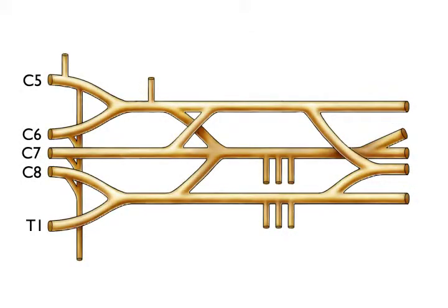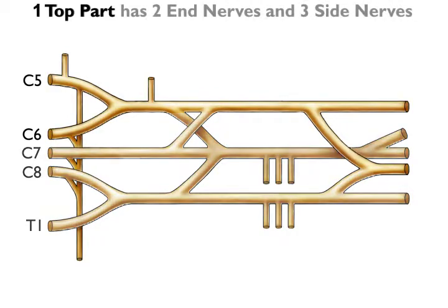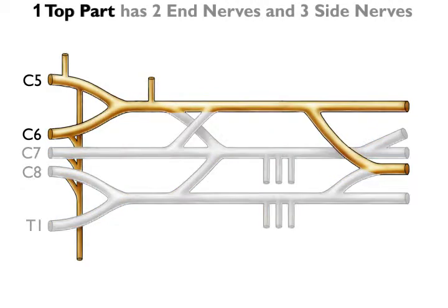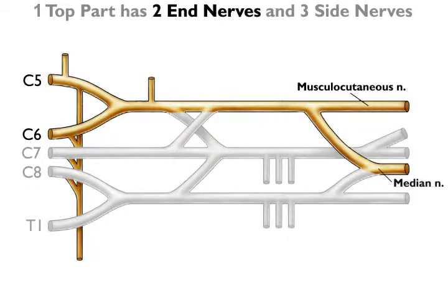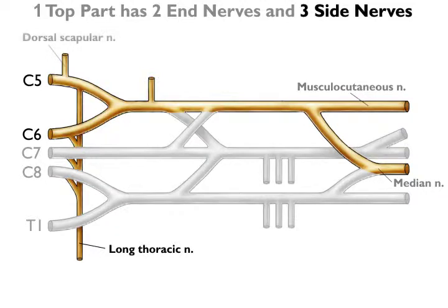So, 1 top part of the plexus, 2 end nerves: the musculocutaneous nerve and the median nerve. 3 side nerves: the long thoracic nerve, the dorsal scapular nerve, and the suprascapular nerve.